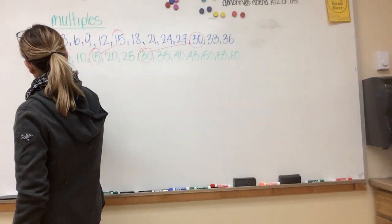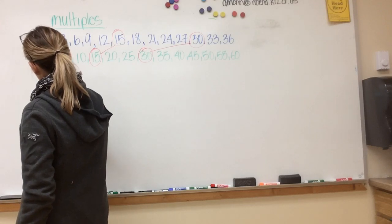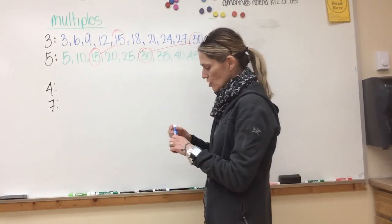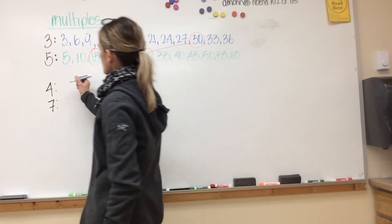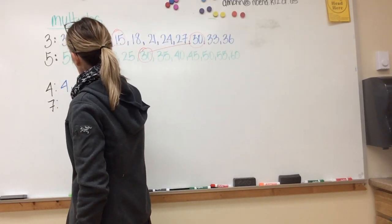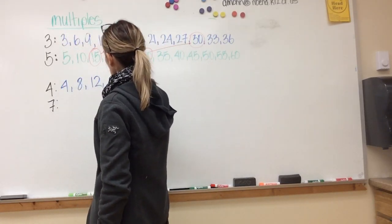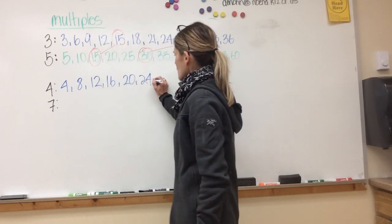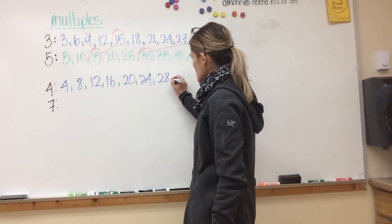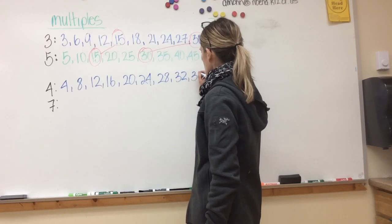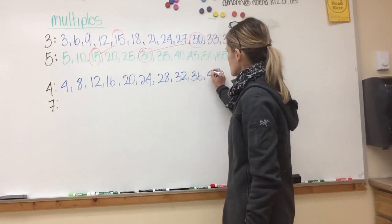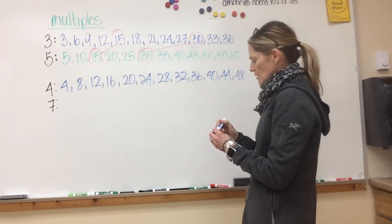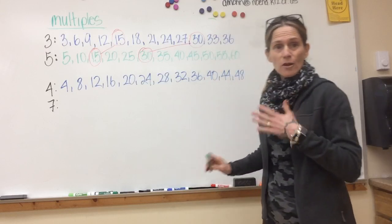Let's try it with two other numbers. Let's do 4 and 7. Okay, fours would be, I'm gonna start at 4, each time adding four more. 4, 8, 12, 16, 20, 24, 28, 32, 36, 40, 44, 48.